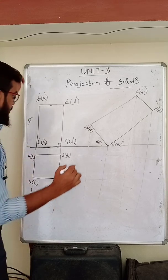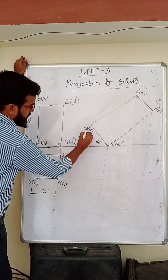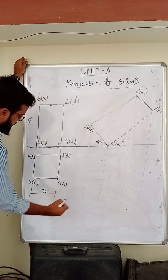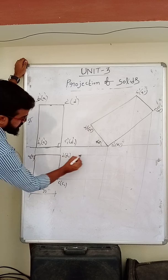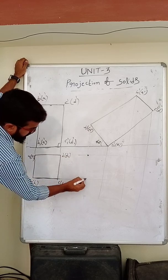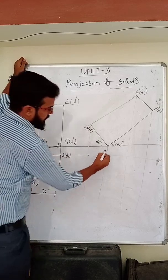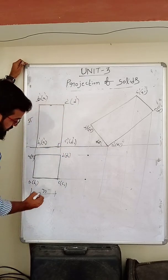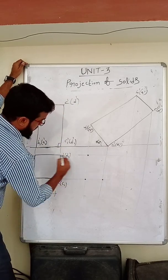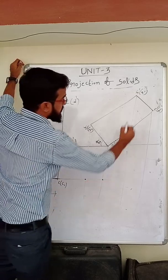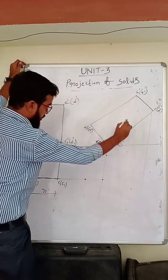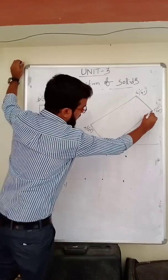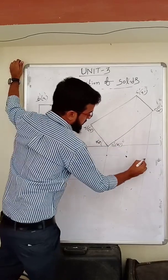What are the points here? B' and A' are on a vertical line; A' on a horizontal line and B' on a horizontal line. Then C' and D': C' is on a horizontal line and D' is on a horizontal line. B' and A' are vertical lines; these two are horizontal lines. C' and D' are vertical lines; C' and D' are horizontal lines.